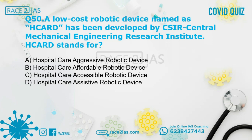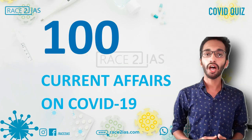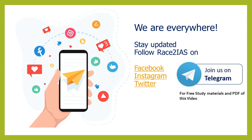Question number 50: A low-cost robotic device named H-CaRD has been developed by the Central Mechanical Engineering Research Institute of CSIR. H-CaRD stands for — Option D: Hospital Care Assistive Robotic Device. The right answer is Option D, Hospital Care Assistive Robotic Device. This robotic device was developed by CSIR's Central Mechanical Engineering Research Institute in Durgapur, and will be used for collection of samples from people exhibiting COVID-19 symptoms and treating COVID-19 patients. That concludes this video — check out part two for more questions.